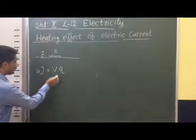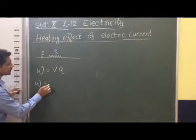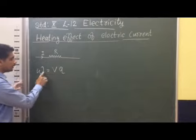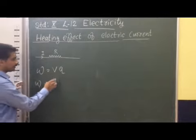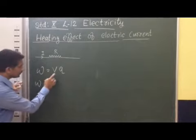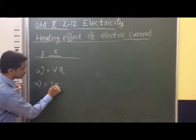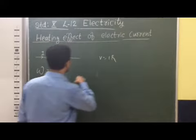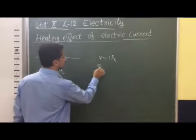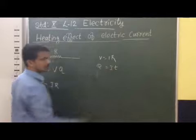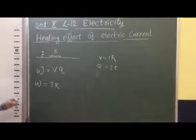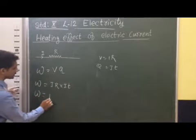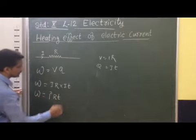So we can modify the situation. Work done is equal to V into Q. According to Ohm's law, V is equal to I into R. And charge Q is equal to I into T. So substituting these two values, we get work done is equal to I squared RT.